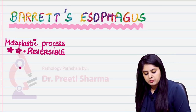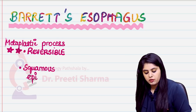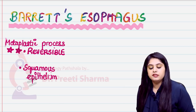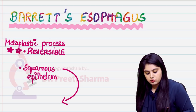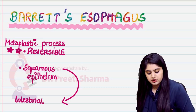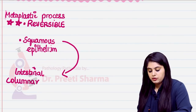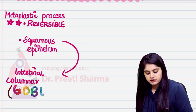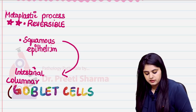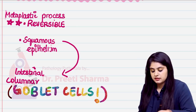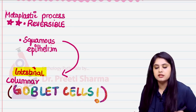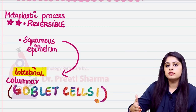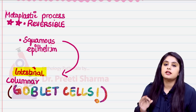Number two, metaplasia is when one epithelium converts into another. In this case, the normal squamous epithelium of the esophagus converts into the intestinal columnar epithelium. The intestinal columnar epithelium is characterized by goblet cells — the presence of goblet cells is what defines intestinal epithelium.